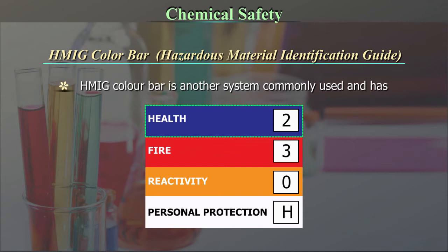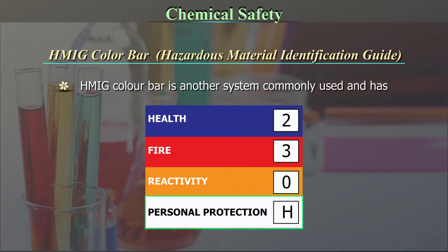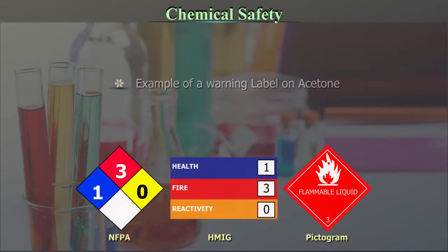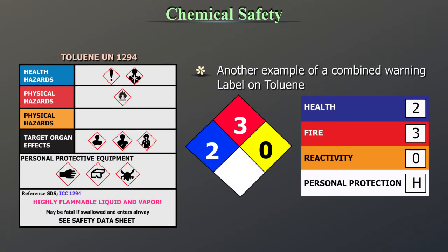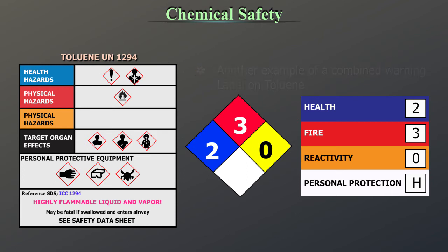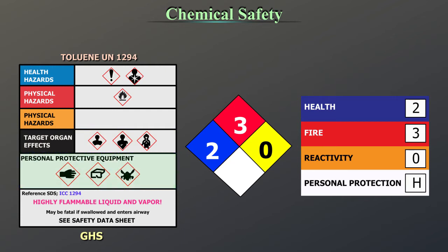HMIG Color Bar — Hazardous Material Identification Guide — is another system commonly used. It has blue for health, red for flammability, orange for physical hazard (i.e., reactivity), and white for personal protection. Fire and reactivity, both components of physical hazards, are separate in this system. An example of a warning label on acetone showing both NFPA and HMIG and pictogram is seen here. Another example is a combined warning label on toluene, where fire is classified as a physical hazard. Target organ effects are also specified and PPEs are illustrated.